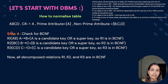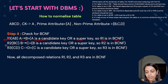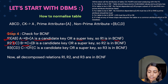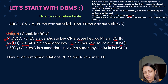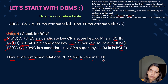Now we check BCNF for each relation. R1 (AB): A determines B and A is the candidate key or super key — R1 is in BCNF. R2 (BC): B determines C and B is a candidate key or super key — R2 is in BCNF. R3 (CD): C determines D and C is acting as a candidate key — R3 is also in BCNF. All decomposed relations R1, R2, R3 are in BCNF.